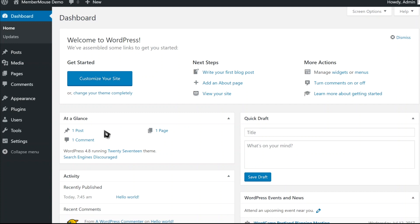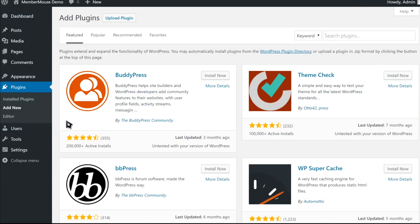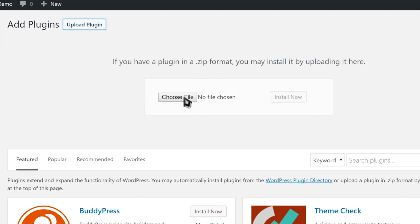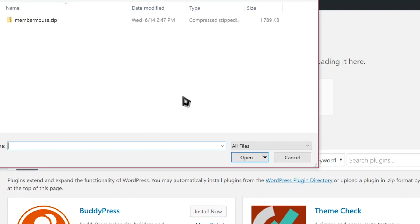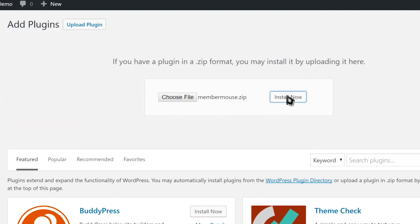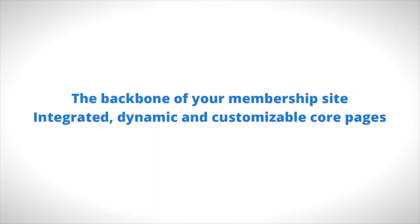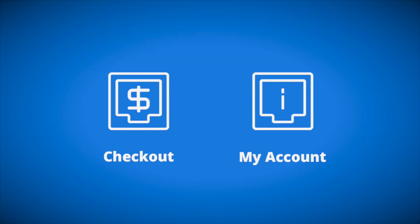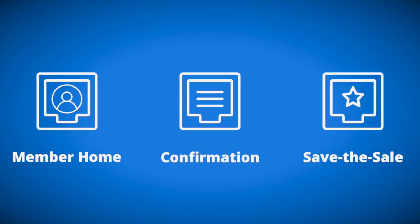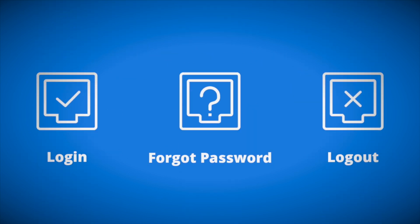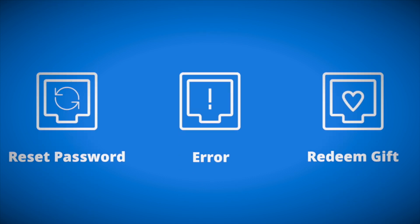The first thing I'm going to do is install the MemberMouse plugin. So I go to Plugins, click Add New, Upload Plugin, and then I'll browse to the place I just downloaded the MemberMouse plugin and click Install. Installation is very quick, but during that time behind the scenes, MemberMouse created the entire framework for your new membership site. At this point, your only job is to configure MemberMouse according to your business needs. Everything else has been done for you.